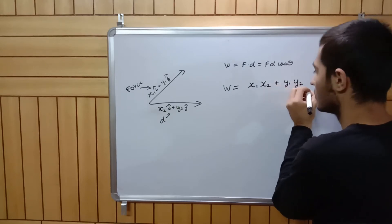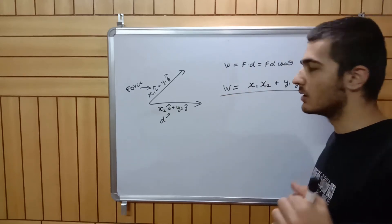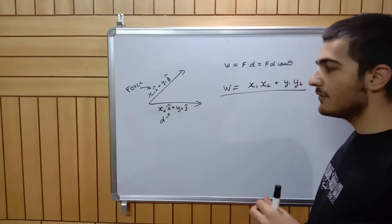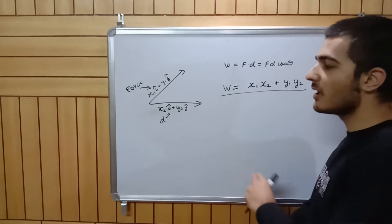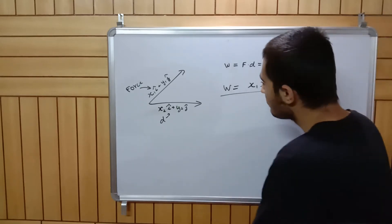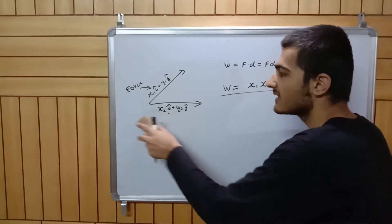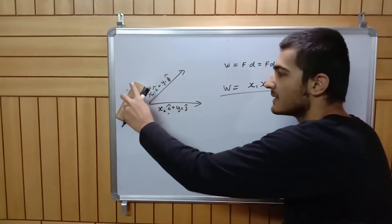Work was equal to x1 times x2 plus y1 times y2. This is the expression that gives us the work, and we derived it for the example of force and displacement.